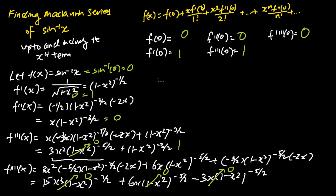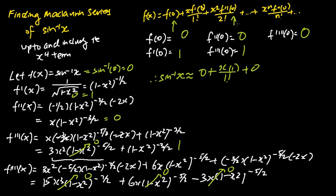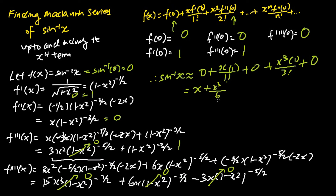We can now apply the Maclaurin series formula to find the Maclaurin series of sine inverse x. The first term is 0. The second term is x times 1 over 1 factorial. The third term is 0, because f''(0) is 0. The fourth term is x cubed times 1 over 3 factorial. The fifth term is 0, because f''''(0) is 0 — so there are no x to the power of four terms. Therefore, the Maclaurin series of sine inverse x, up to and including the x to the power of four terms, is x plus x cubed over 6.